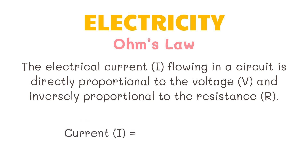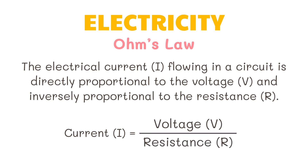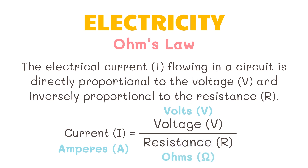Current, represented by the capital letter I, is equal to voltage, represented by the capital letter V, divided by resistance, represented by the capital letter R. Now take note of the units of measurement for these quantities: for current, it is amperes or amps for short, represented by the capital letter A; volts for voltage, represented by the capital letter V; and ohms for resistance, represented by the Greek letter omega.